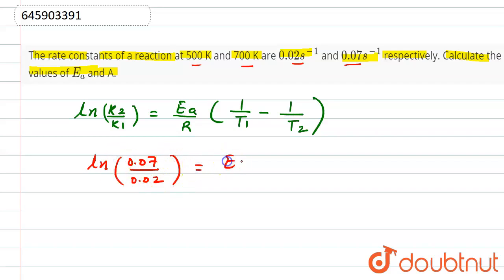Here we have to find the value of Ea. Now take the value of R as 8.314 because we have to find the value of activation energy in joules. T1 is given as 500 and T2 is given as 700. Now take the LCM in the right hand side.